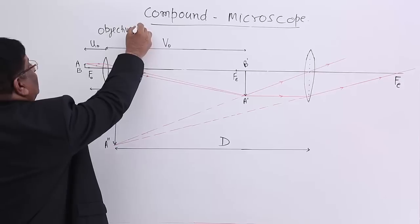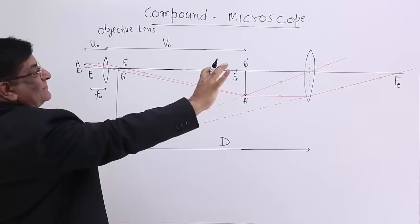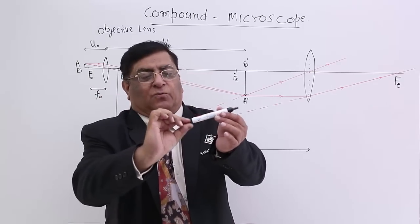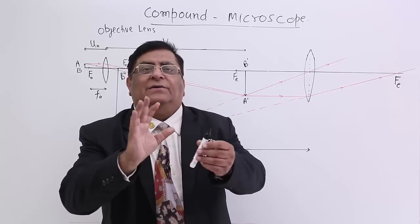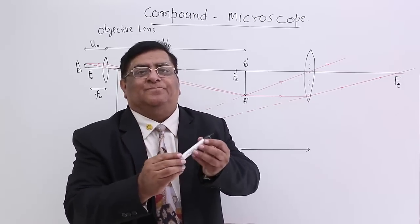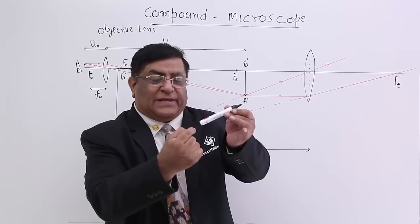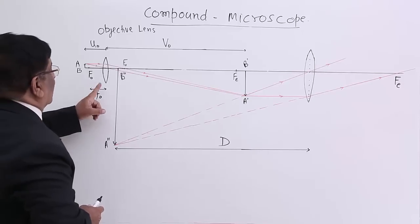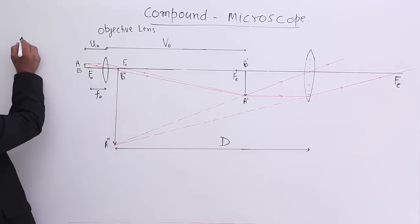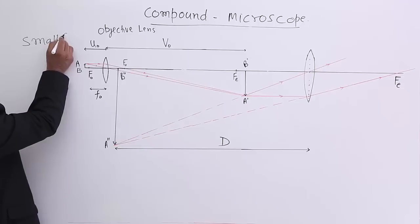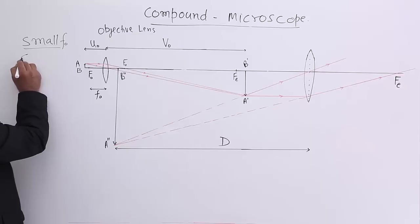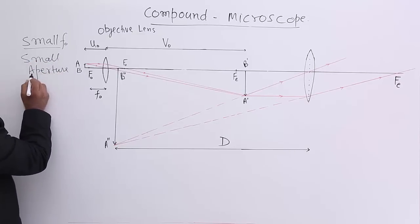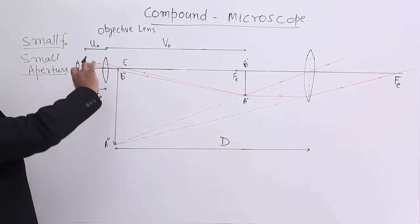Two lenses are fitted in a pipe. I have not drawn that pipe here; it is for the study of principle. So the lens where we place the object is known as the objective lens. What is the specialty of the objective lens? It has a small focal length and a small aperture, because for small focal length it is necessary that the aperture is small.